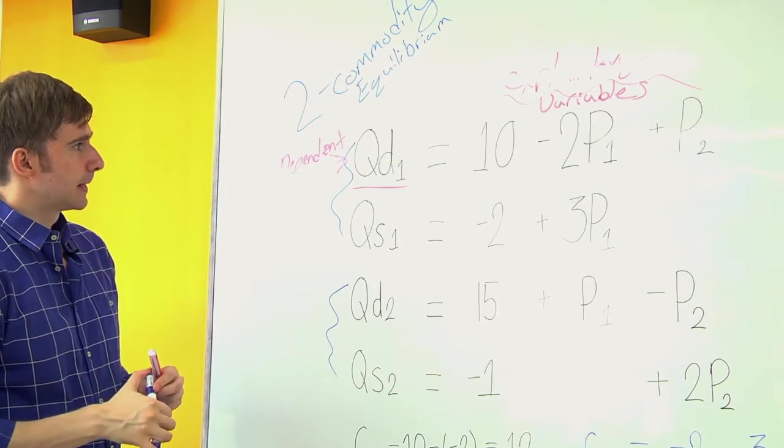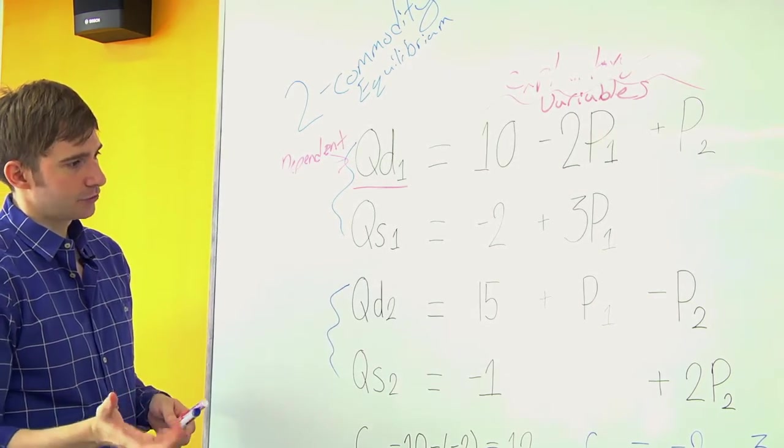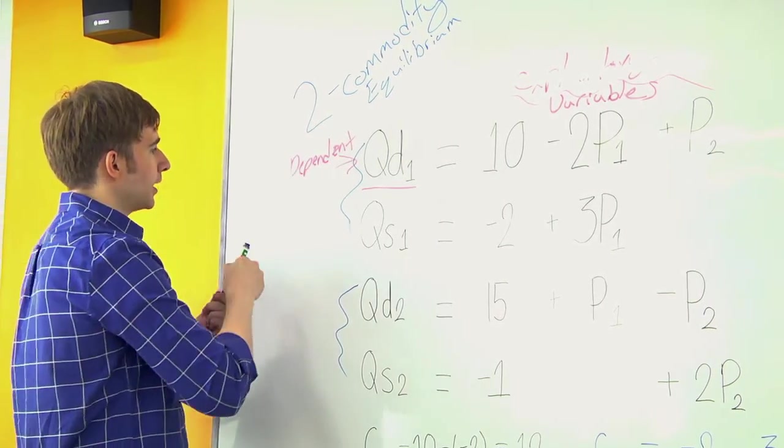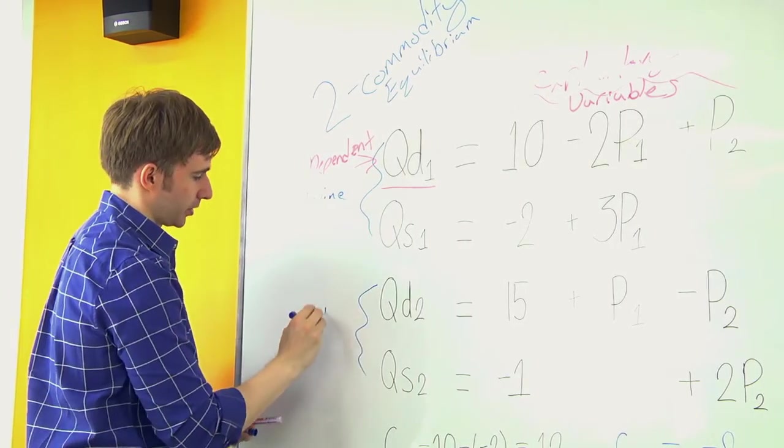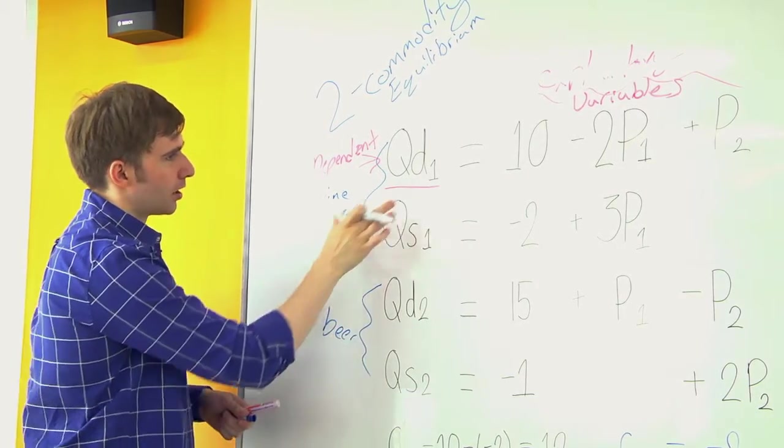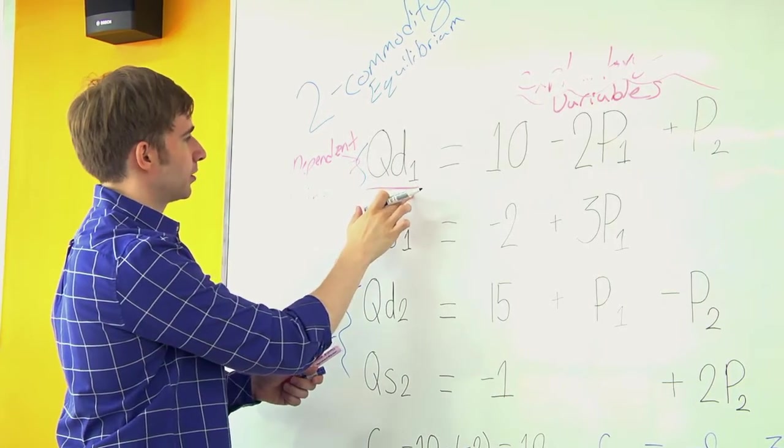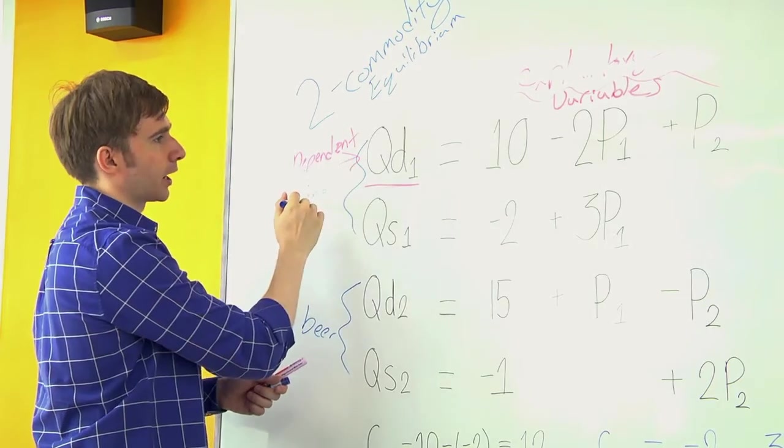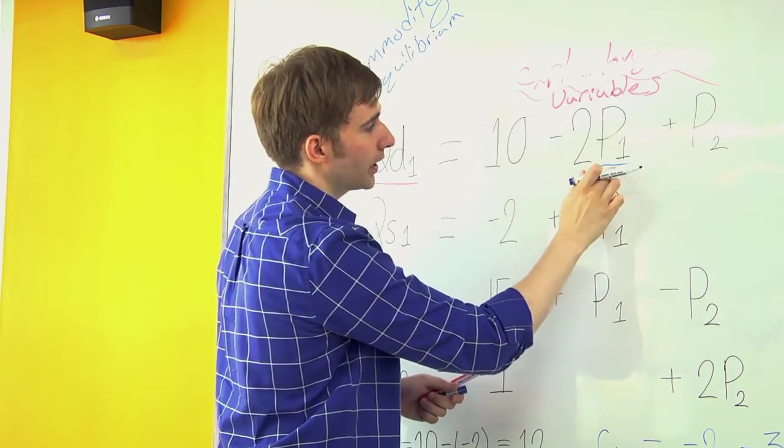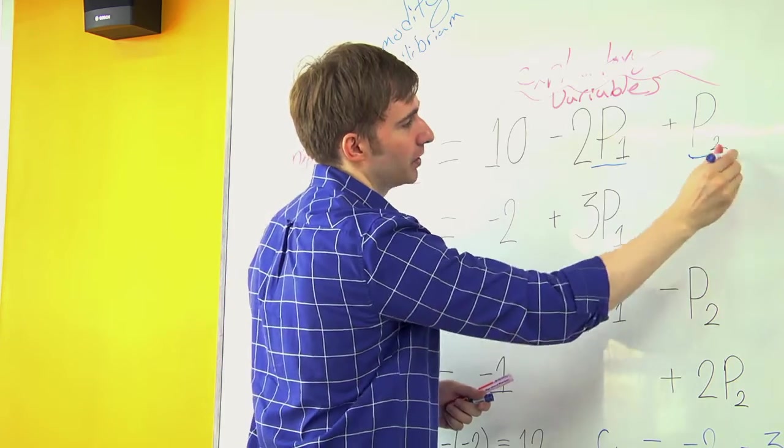So if we think about this for a second, let's say this is wine, and this is beer. So what QD1 is saying, the quantity demand for wine depends on the price of wine and the price of beer.